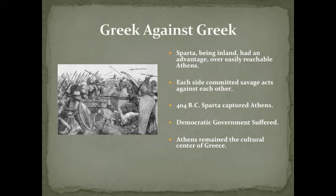As the war dragged on, each side committed savage acts against each other. Sparta, in the end, even allied with Persia. Finally, in about 404 BC, Sparta captured Athens with the help of the Persian navy, and they stripped the Athenians of their fleet and empire. However, they decided not to destroy the city of Athens itself. In light of corruption and selfish interests, the democratic government began to suffer. And although its spirit and vitality declined, Athens still remained one of the cultural centers of Greece.